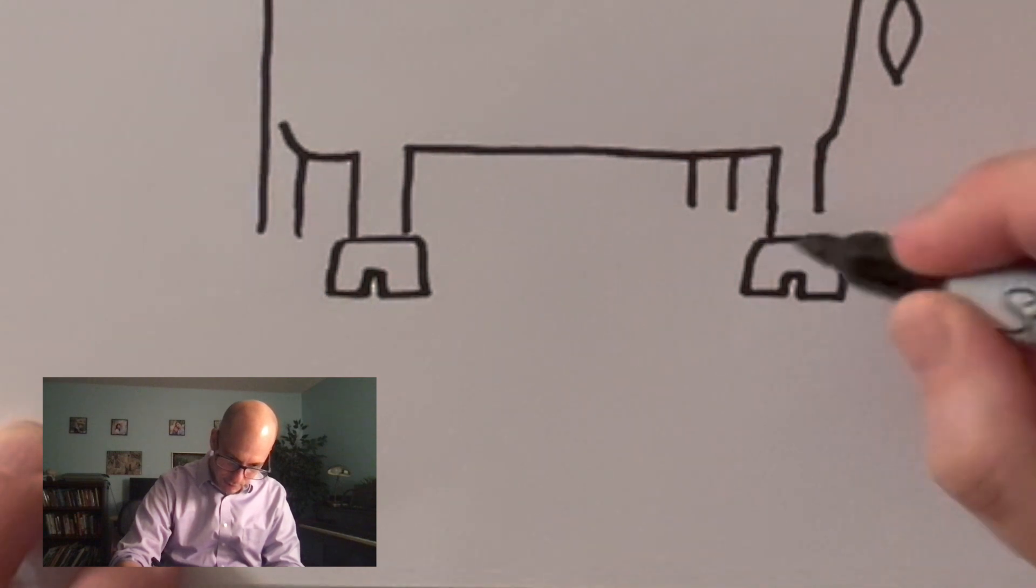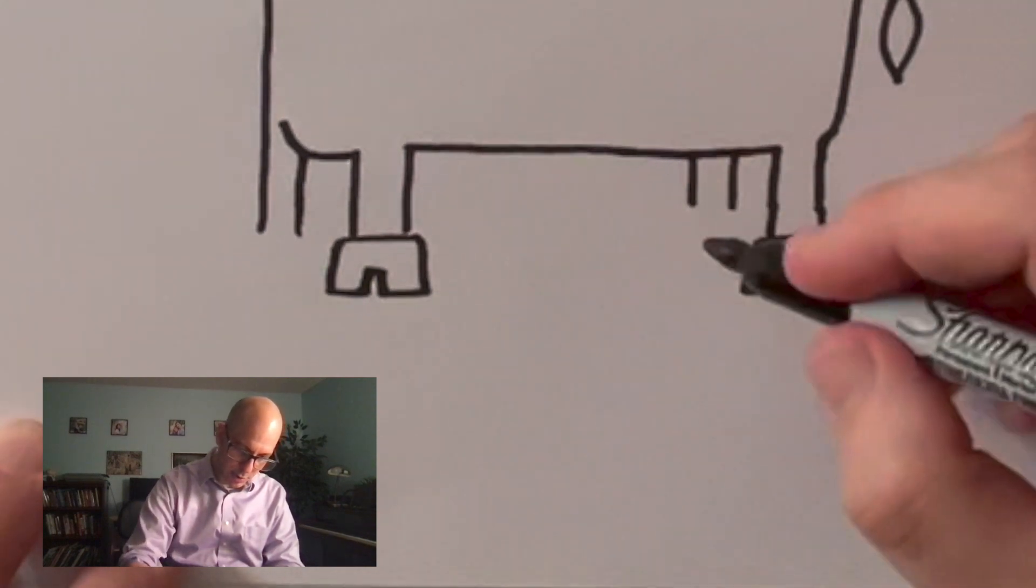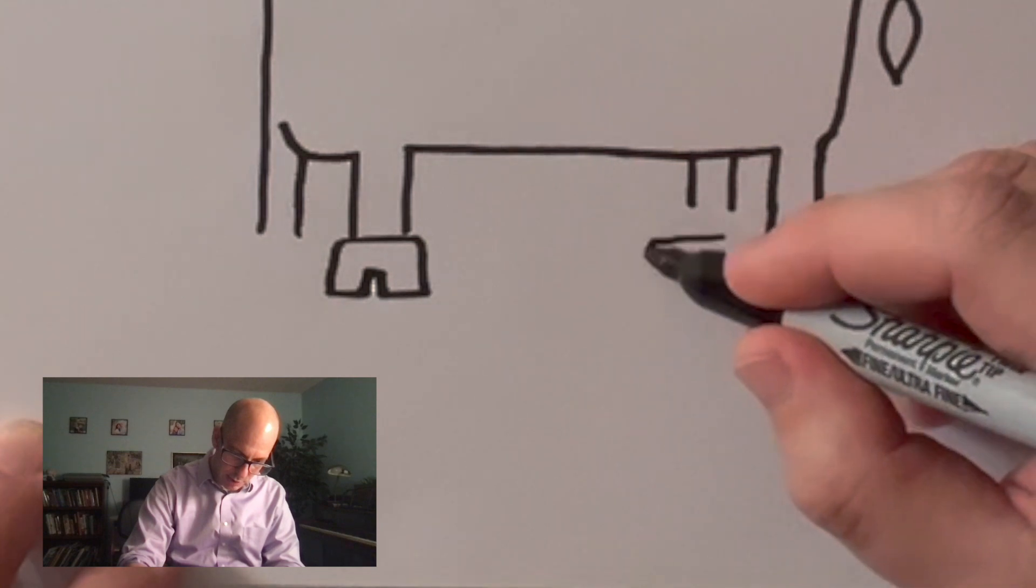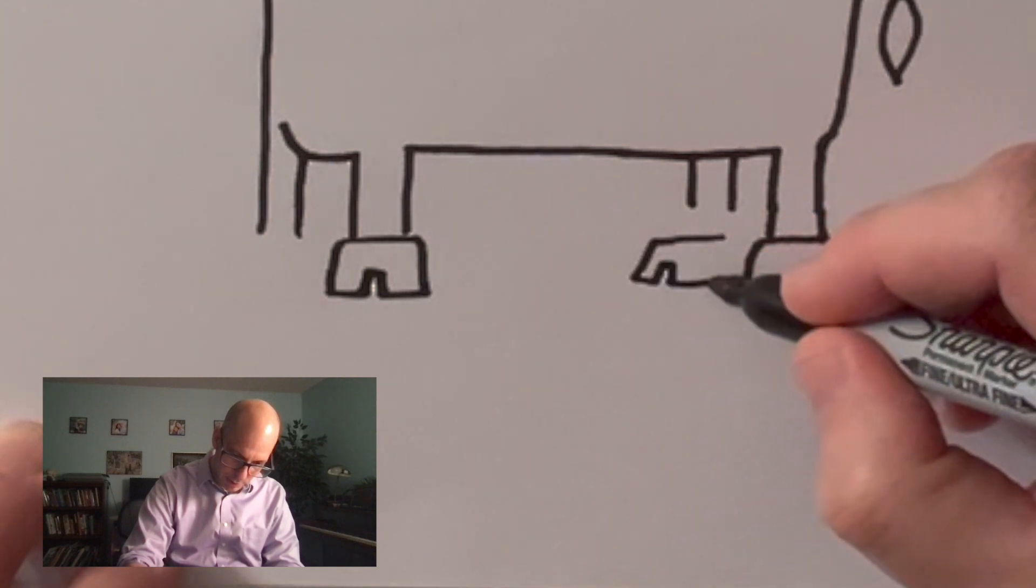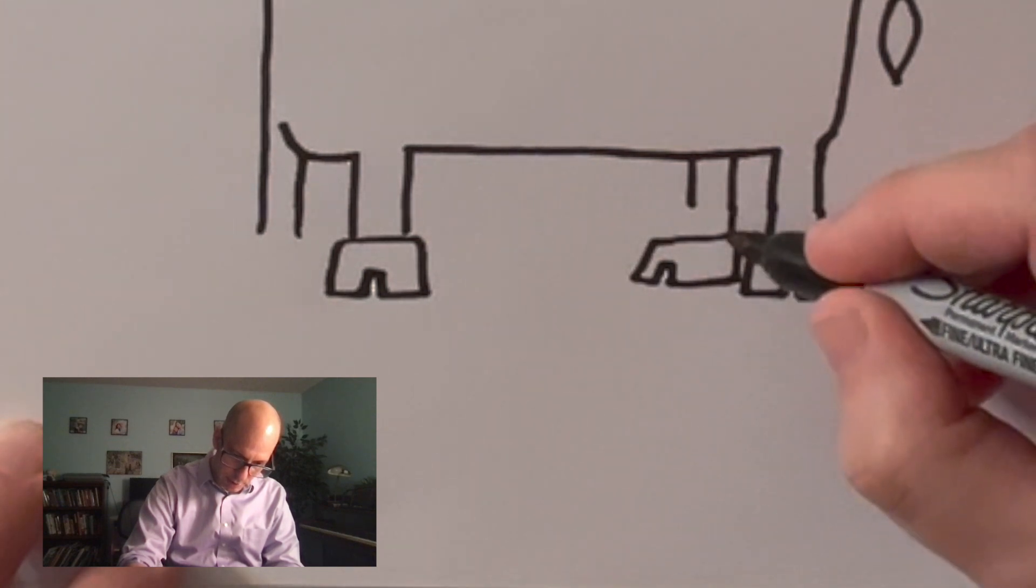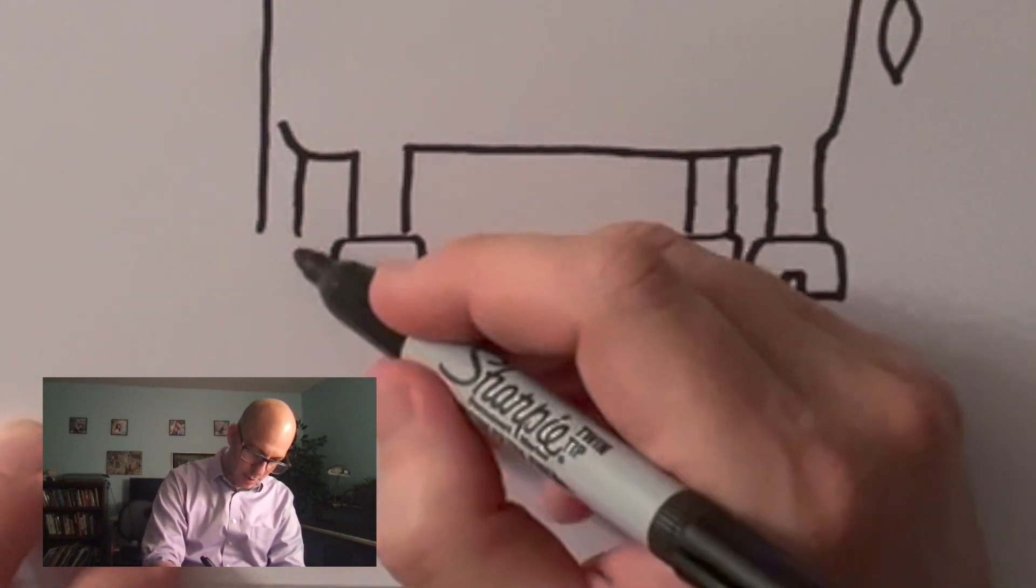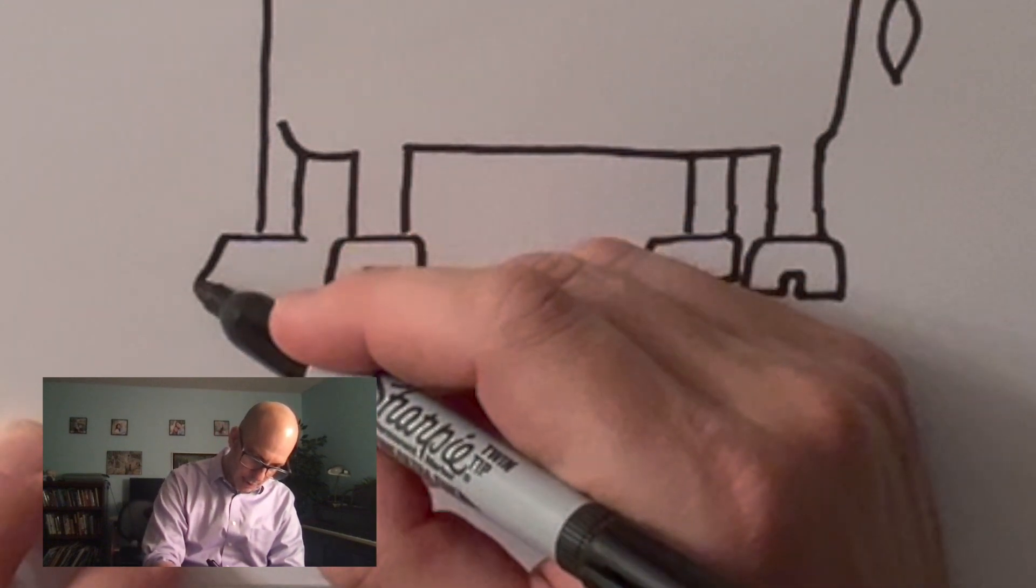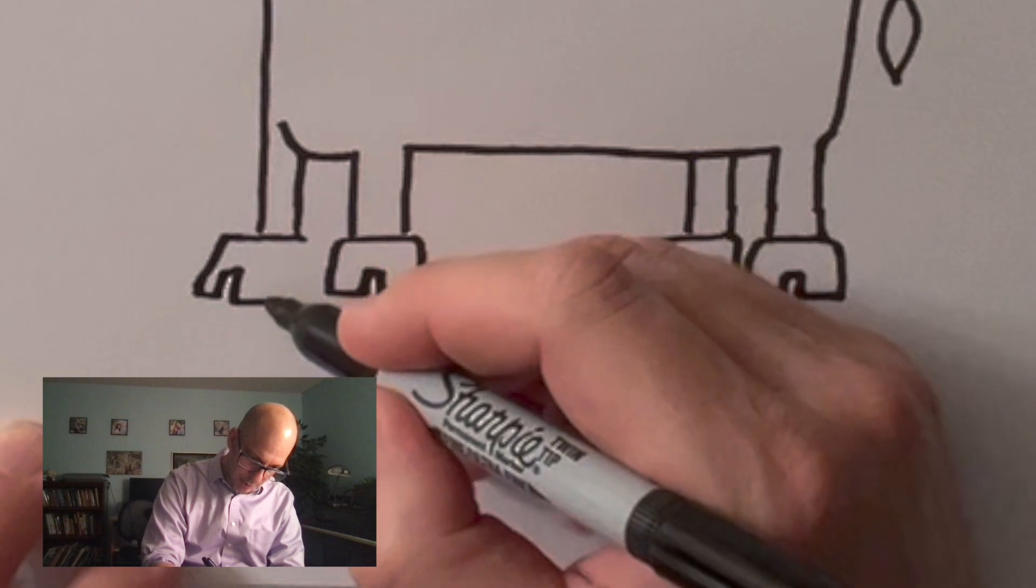Normally when I draw animals like a pig or a goat, I would give it funny little hooves. But I just think there's something funny about big clumpy clunky cow feet. And so here is my cow's big clumpy clumpy cow feet.